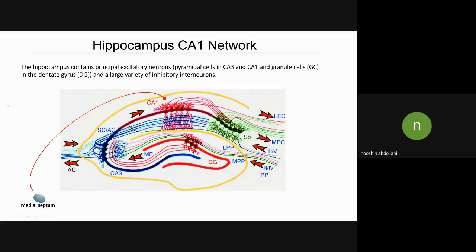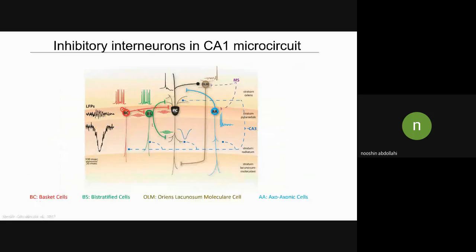The hippocampus contains excitatory neurons, including CA1, CA3, and granule neurons in DG. And there are a variety of interneurons in CA1 area, including basket cells, BS, AA, OLM, inhibitory interneurons.